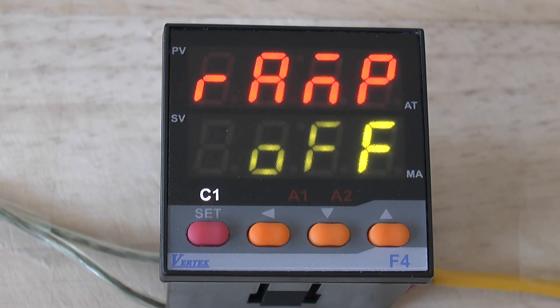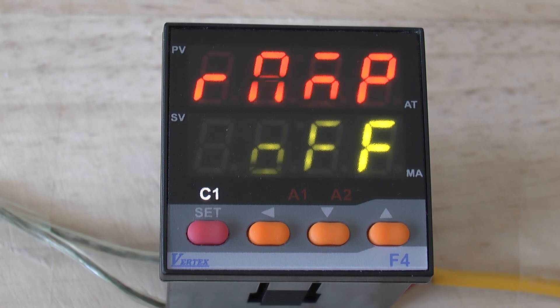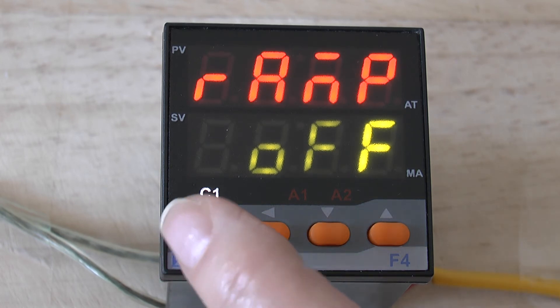The first parameter is the RAMP parameter. This is where you set a one-step ramp that will become functional when you power up the controller. If we push the SET button again,